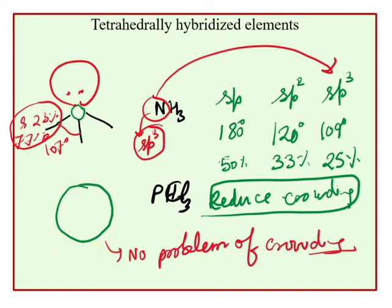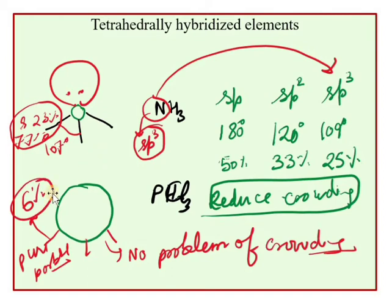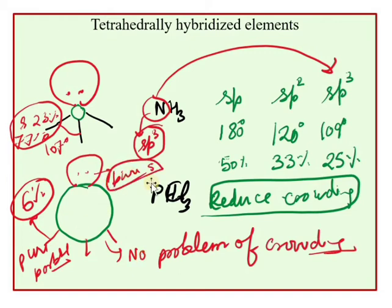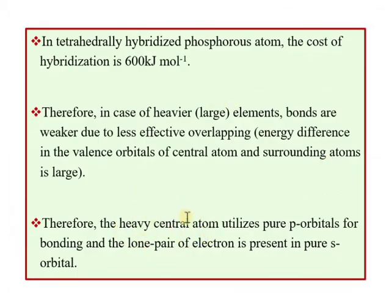In PH3, the bonding is through pure p orbitals with only about 6% s character in the bonding orbitals. The lone pair of electrons resides in a pure s orbital. This is what we say for large elements — bonding through pure p orbitals and lone pair in the pure s orbital.